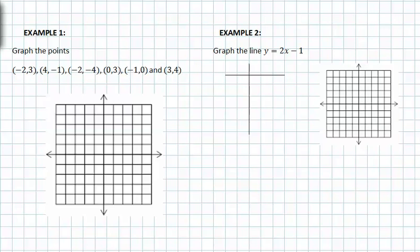Let's try example one, which is graphing coordinate points. If we know that this is our x-axis and this is our y-axis, we can find the coordinate point (-2, 3) by traveling to the left from the origin two spaces, and then heading in the vertical or up direction three spaces.